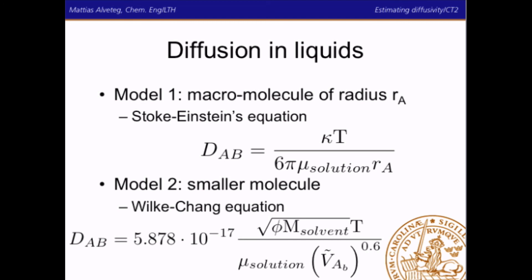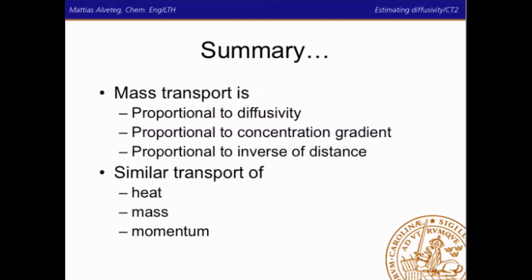So, to summarize, the diffusive mass transport is proportional to diffusivity, to the concentration gradient, and thus to the inverse of the distance. And we have similar transport of heat, mass, and momentum.